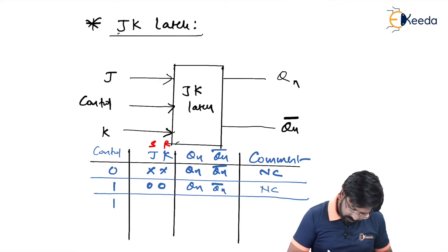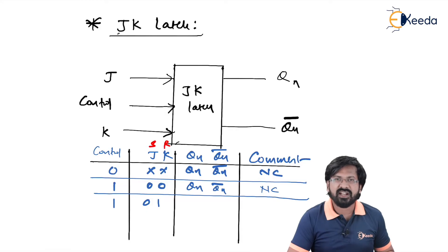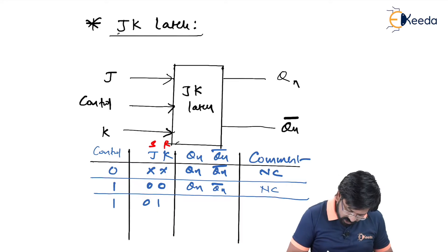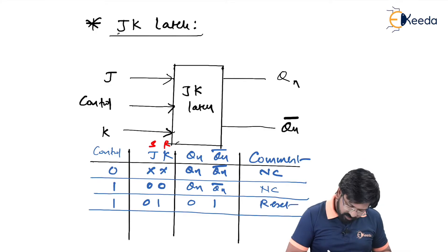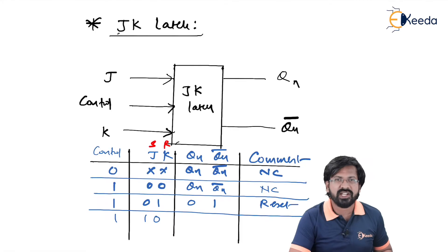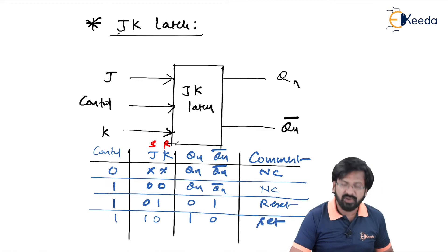When control equals 1 and J and K are changed to 0 1: for reference, R equals 1 and S equals 0, of course it is called a reset state. So Qn is 0 and Qn bar is 1 — the status is reset. Next, when control equals 1 and J and K are changed to 1 0: S equals 1, so the latch gets into set condition. Therefore Qn equals 1 and Qn bar equals 0 — it is called the set condition.